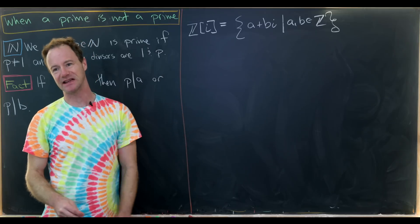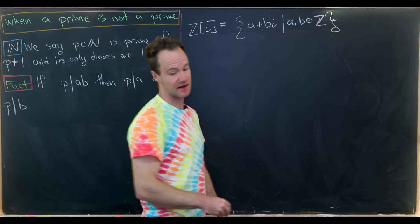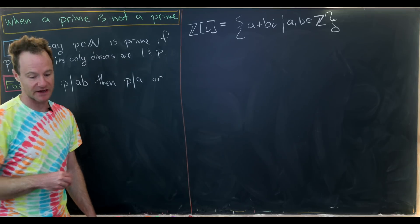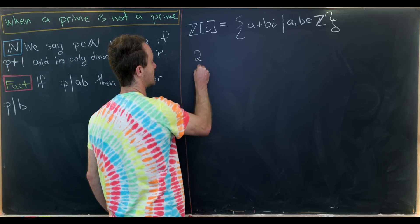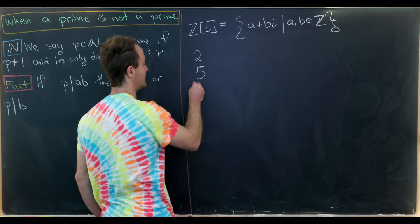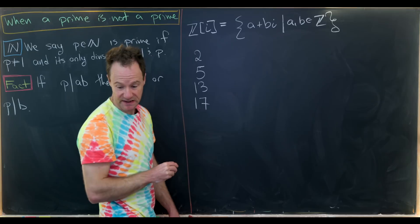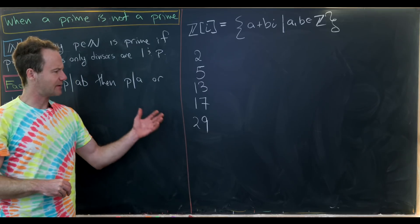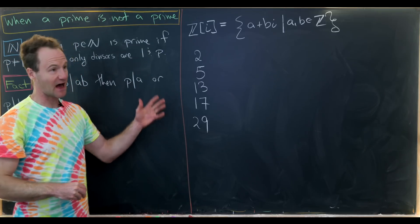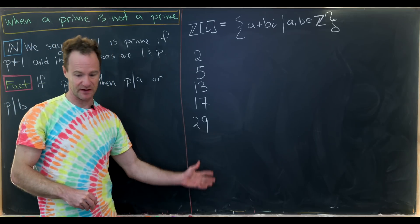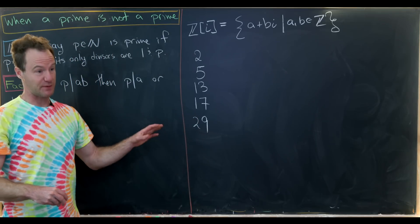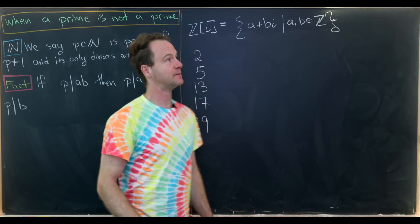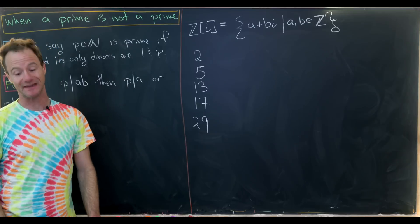You can think of the Gaussian integers as lattice points in the complex plane. Now let's list some numbers that are prime within the natural numbers: 2, 5, 13, 17, and 29 are all prime. But while these are prime within the natural numbers, they are not prime within the Gaussian integers.